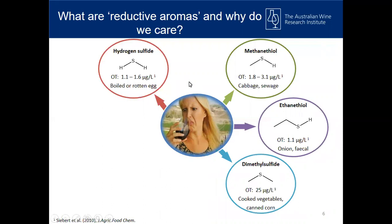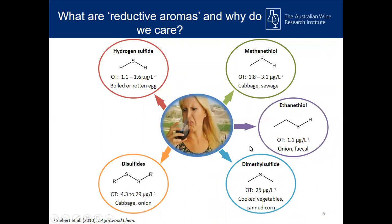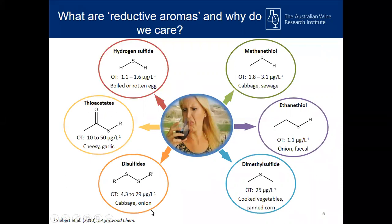Some of the other compounds of interest is dimethyl sulfide. This imparts negative aromas when present at very high concentrations, but when present in lower concentrations, it can actually impart positive aromas like black currants and even truffle. The other compounds we're also interested in are the thioacetates and disulfides. These compounds not only impart negative aromas of cheesy, garlicky, cabbage and onion, but they can also act as precursors to some of the smaller molecules.